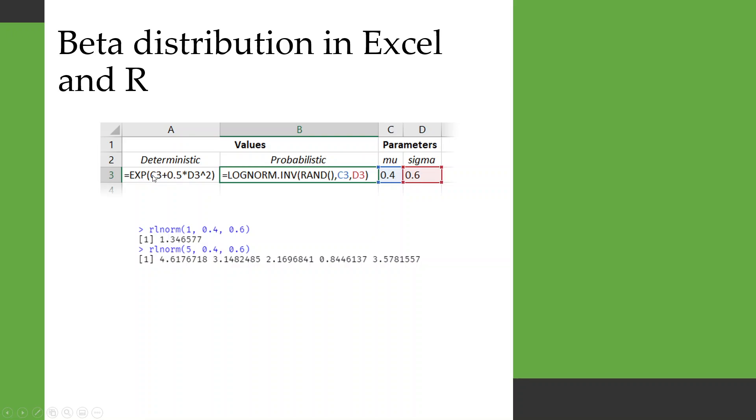Incidentally, if you want to get back the mean from this distribution, you can't just do exp of the mu parameter. You have to account for the fact that it's a skewed distribution. So you also have to add this sigma, square it and divide it by 2 before you take the exponential of that.